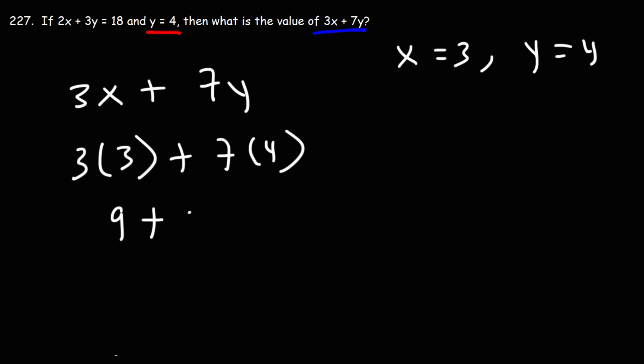3 times 3 is 9. 7 times 4 is 28. 9 plus 28 is 37. So that is the value of 3x plus 7y.